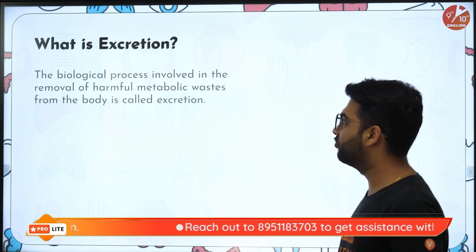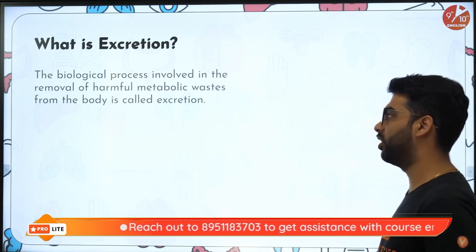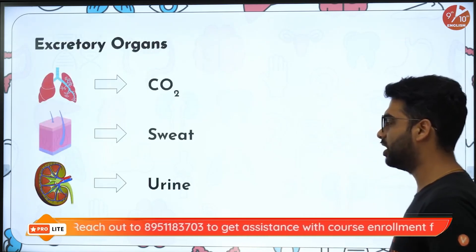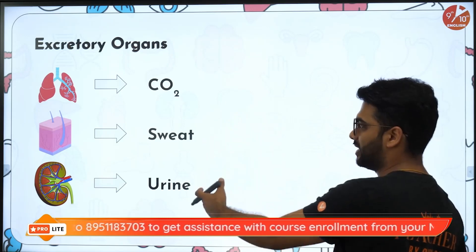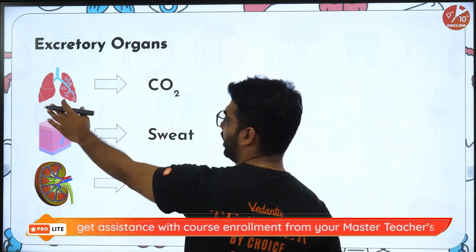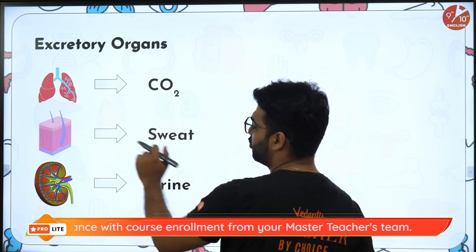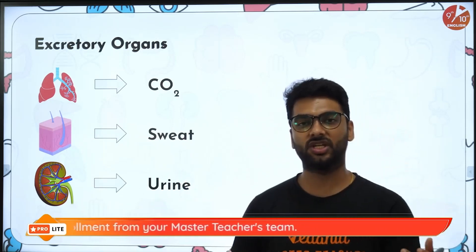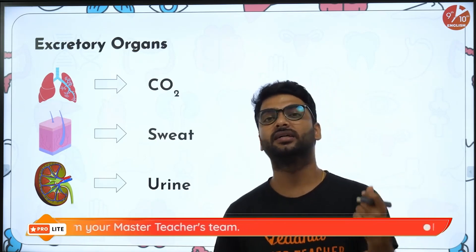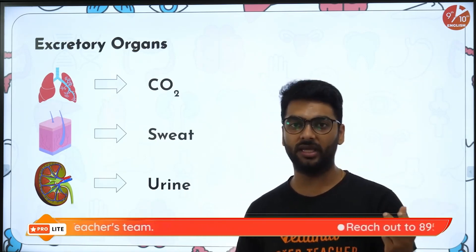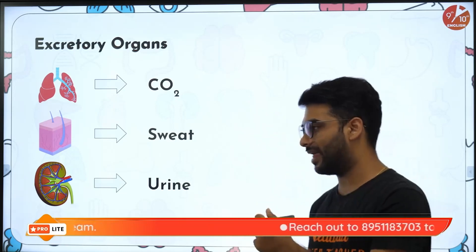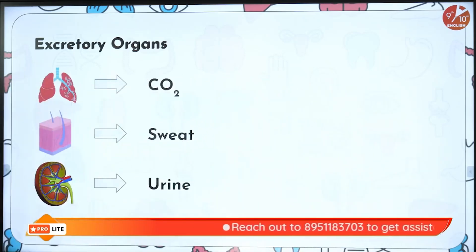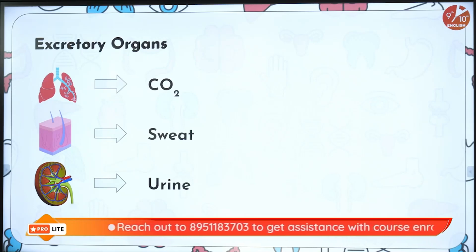The biological process involved in removal of harmful metabolic waste from the body is called excretion — that is carbon dioxide, sweat and urine. Carbon dioxide is removed through the lungs, sweat is removed through the skin, and urine is removed through the kidneys. If a question comes in the exam asking about the excretory organs in the body, you will write lungs, skin and the kidney — they are the excretory organs in the body.